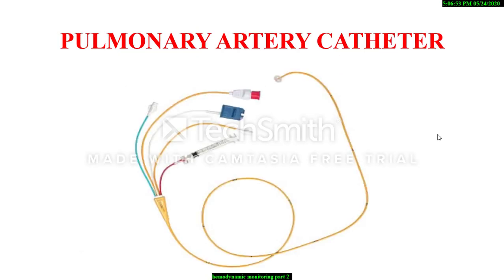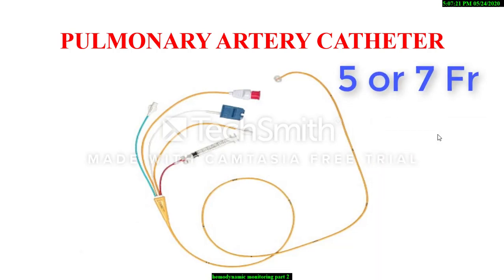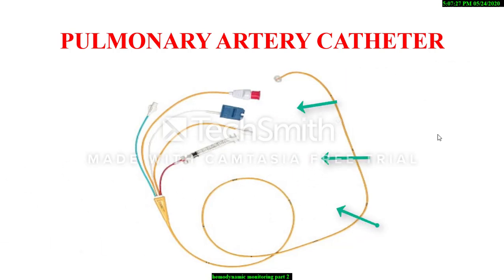The pulmonary artery catheter is constructed from polyvinyl chloride and has a pliable shaft that softens further at body temperature. Because polyvinyl chloride has a high thrombogenicity, the catheters are generally coated with heparin. The standard catheter length is 110 cm. The most commonly used external diameter is 5 or 7 French. The catheter is marked at 10 cm increments to aid insertion. A balloon is fastened 1 to 2 mm from the tip and when inflated, it guides the catheter by virtue of fluid dynamic drag. When fully inflated, the balloon protrudes above the catheter tip, thus distributing these forces over a large area and minimizing the chances for endocardial damage or arrhythmia during catheter insertion.